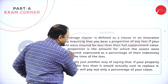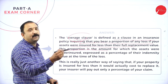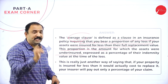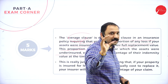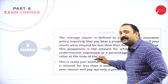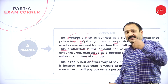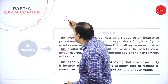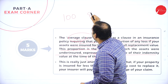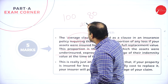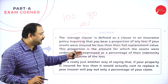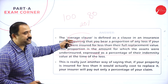This proportion is the sum of the amount for which the assets were underinsured — underline the word 'underinsured', meaning they were not insured for the full value — expressed as a percentage of their indemnity value at the time of loss. For example, if the price of your asset is 100 rupees but you have insured it for 80 rupees, there is a 20% undervalue. That has to be understood clearly in the average loss factor.